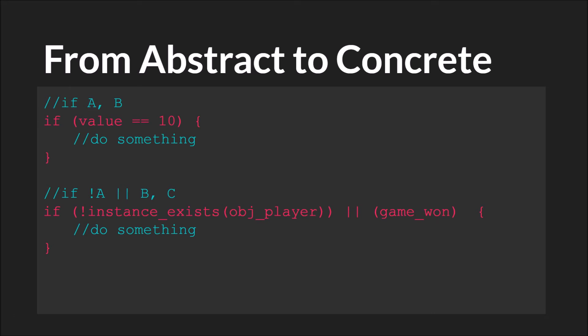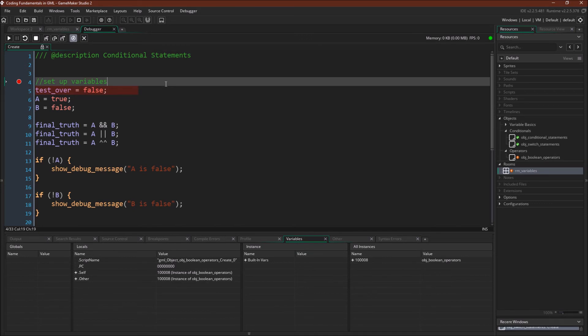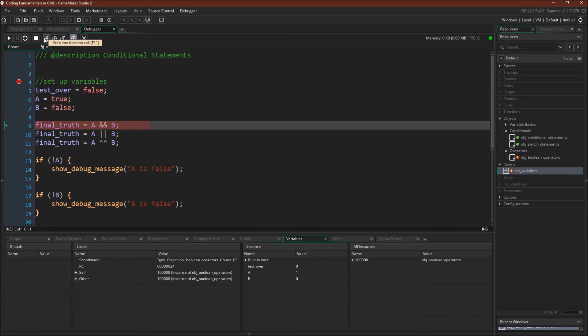Okay, let's switch over to GameMaker Studio 2 and see a couple examples of this. So as usual, I've already run the debugger and set up breakpoints. We're going to initialize a couple of variables. So test over equals false, which GameMaker will normally store as a zero. A equals true, B equals false.